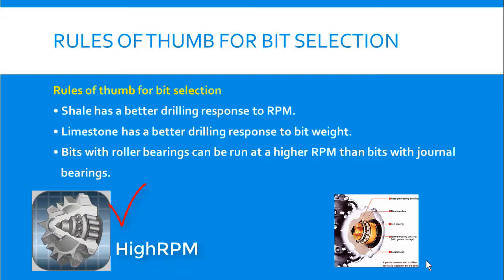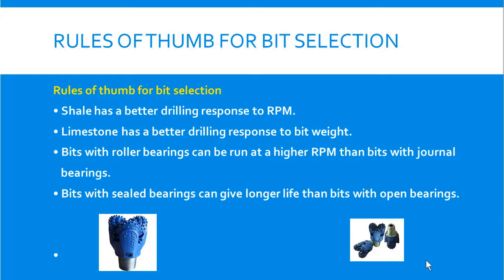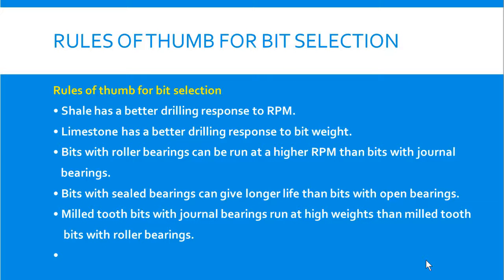Bits with sealed bearings can give longer life than bits with open bearings, because in open bearings the cone's internal parts are exposed to formation debris. This formation cutting or debris may jam the cones, and that is why open bearing bits have a shorter life compared to bits with sealed bearings.